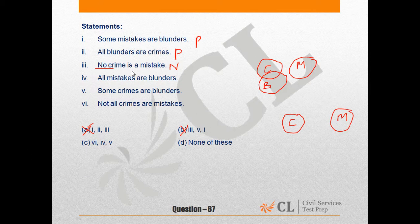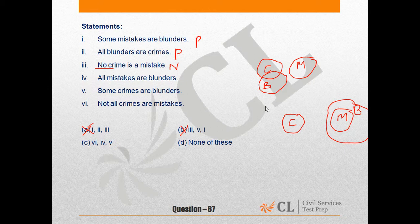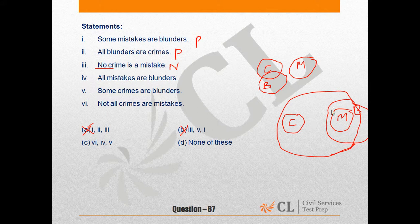Now statement 4 says all mistakes are blunders. So we can keep it like this. All mistakes are blunders. Now statement 5 says some crimes are blunders. I don't know, we don't have sufficient data for this. There is another probable scenario that blunders can be the superset of both these sets. That is also possible, but we do not have sufficient data to come to a conclusion that some crimes are actually blunders.